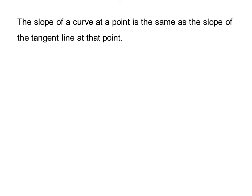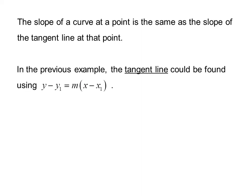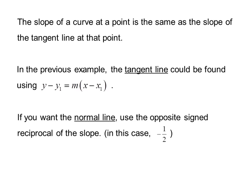The slope of a curve at a point is the same as the slope of the tangent line at that point. In the previous example, the tangent line could be found using the point-slope form of the linear equation: y minus y1 equals m times (x minus x1). If you want the normal line, use the opposite sign reciprocal of the slope, in this case negative one-half. The normal line is perpendicular to the tangent.